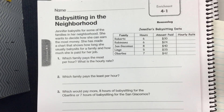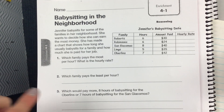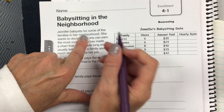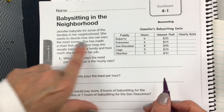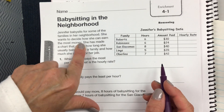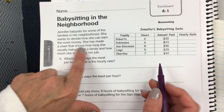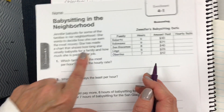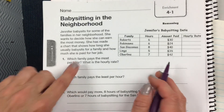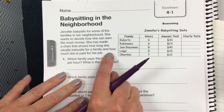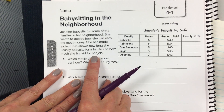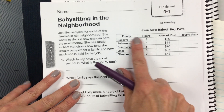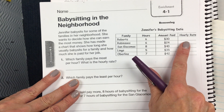Babysitting in the neighborhood. Jennifer babysits for some of the families in her neighborhood. She wants to decide how she can earn the most money. She has made a chart that shows how long she usually babysits for a family and how much she is being paid for her job. Here's the chart.